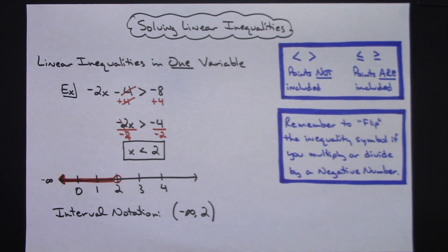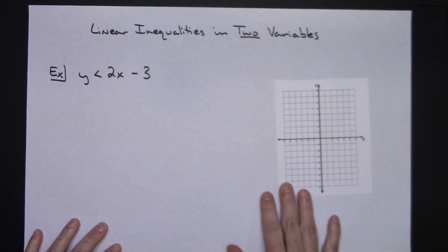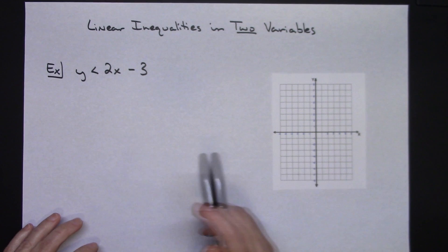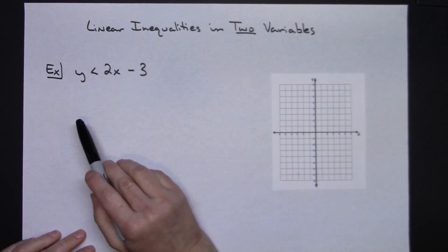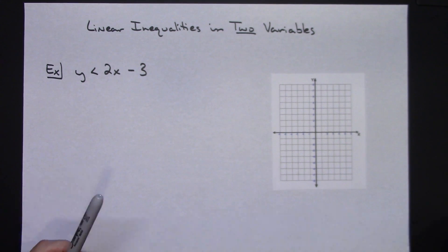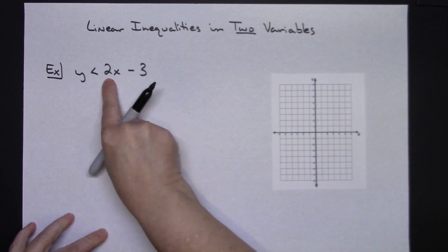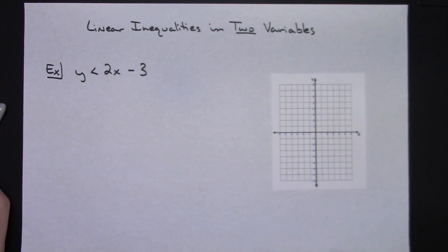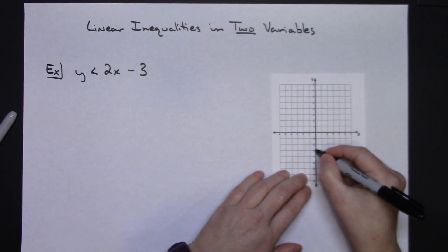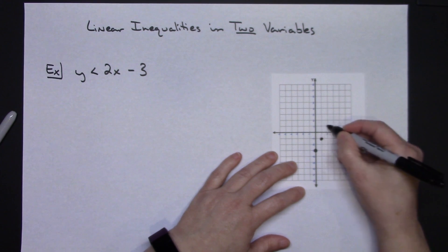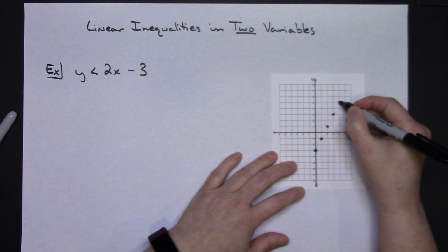Now let's look at inequalities in two variables. We need a coordinate plane to graph the solution. In this example, y is less than 2x minus 3 — slope-intercept form with slope of 2 and y-intercept of negative 3. To graph: place a dot at negative 3 on the y-axis, then use the slope — up 2 and to the right 1 — several times to accurately place the line.